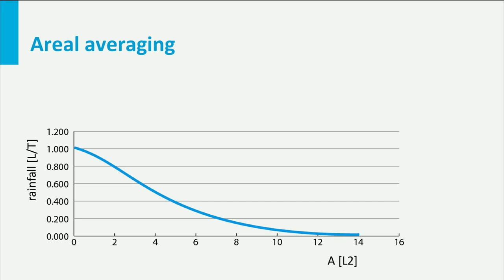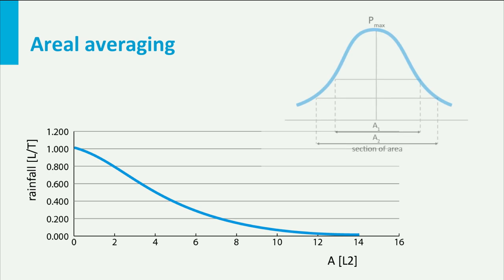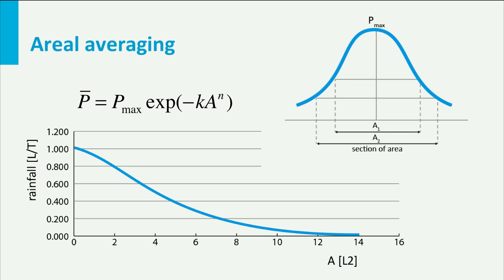The aerial extent of an event is described by the aerial reduction curve. If we look at a very extreme precipitation event observed at a certain spot, then we may assume that around it the event was less extreme. Generally it reduces according to some Gaussian distribution, reflecting the size of the event. It can be described by a Gauss-like equation of the maximum intensity Pmax, the area A and two parameters K and N.